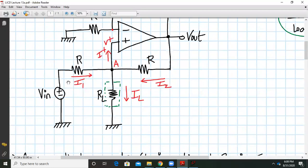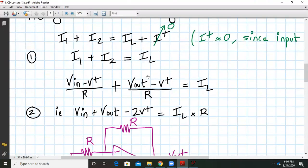From the circuit diagram, what is I1? I1 is V in minus V plus upon R. Similarly, what is I2? I2 is V out minus V plus upon R. We write that down over here.